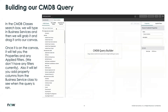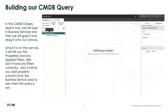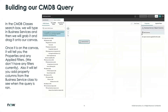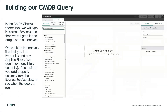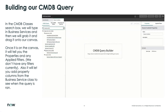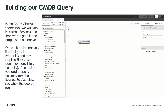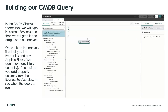We want to search for 'Business Service' and drag that over to the screen. Notice the color is gray — this is our indication that it is the first node in our query and everything will build from it. When you click on the node, you can see the properties and the applied filters. You can also add property columns to appear in the query result — every node you drag out, you can actually add columns from that particular data to see in the result once you run it.